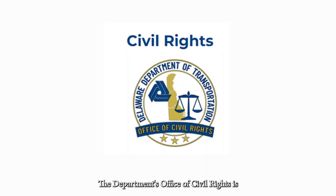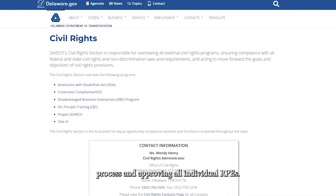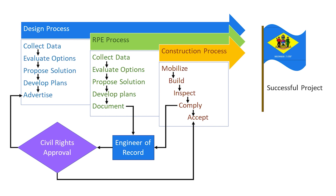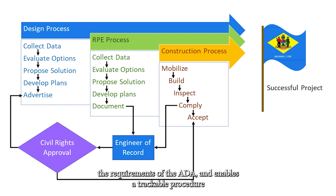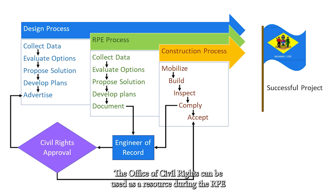The Department's Office of Civil Rights is tasked with overseeing the Department's RPE process and approving all individual RPEs. The Department's streamlined RPE process promotes consistency of practice across the Department, establishes a check to ensure the Department is following the requirements of the ADA, and enables a trackable procedure which will simplify any future ADA investigations. All RPEs are to be prepared by or under the direct supervision of the engineer of record. The Office of Civil Rights can be used as a resource during the RPE development process to ensure timely reviews and approvals.